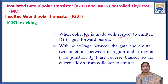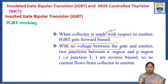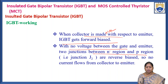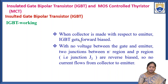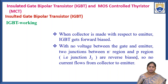When the collector is made positive with respect to the emitter, the IGBT enters the forward biased region. With no voltage between the gate and the emitter, the two junctions between the N region and P regions are reverse biased. Junction J2 is reverse biased, so there is no current flow from collector to emitter.